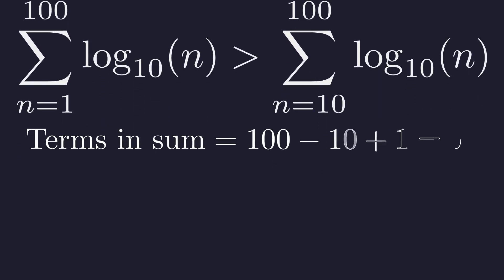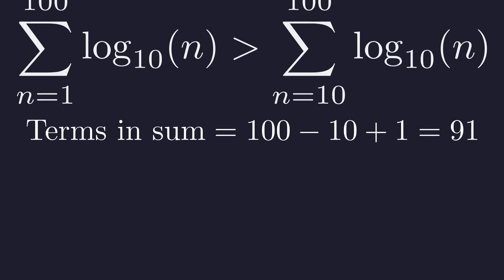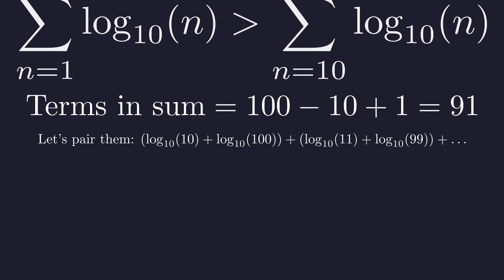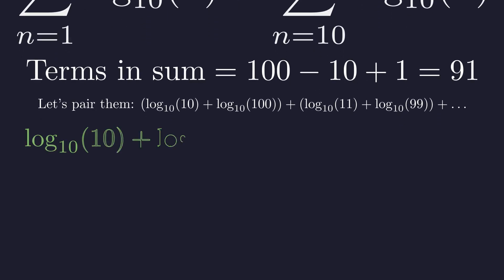How many terms do we have here? From 10 to 100, that's 91 terms. Since that's an odd number, we can pair them up. Smallest with largest, second smallest with second largest, and so on. That leaves one term in the middle unpaired. Look at the first pair: log of 10 plus log of 100. Using our product rule in reverse, that's the log of 10 times 100, which is the log of 1000. And that equals 3.